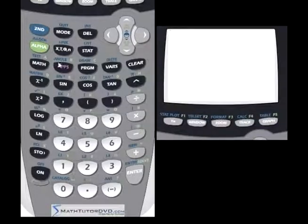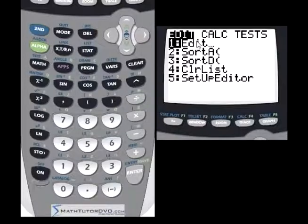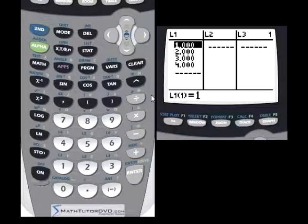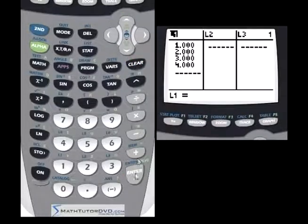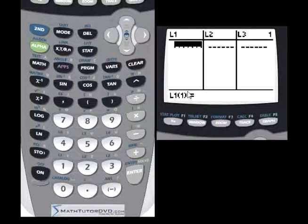So the first step is to input your data. We go to the stat menu and just like before we edit our list. So we're going to go to our list. Now in this case I have some stuff left over from earlier, I left it in there on purpose to show you how to clear a list. So we go up to the title, we hit clear and then we hit enter and then everything on the list disappears.